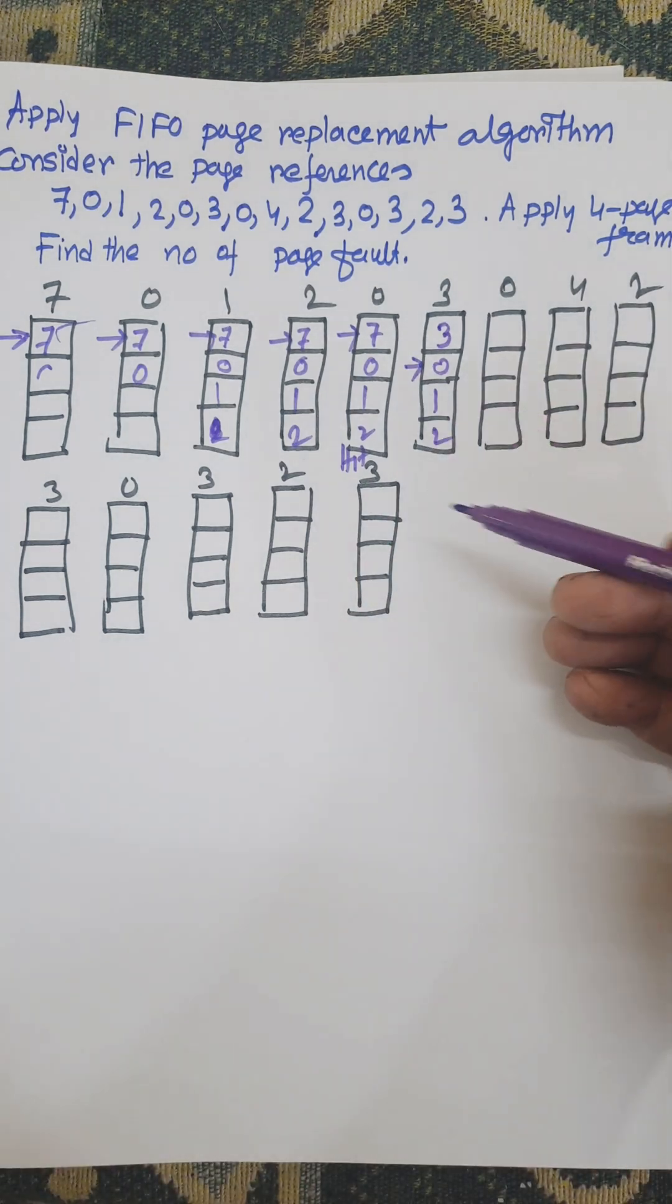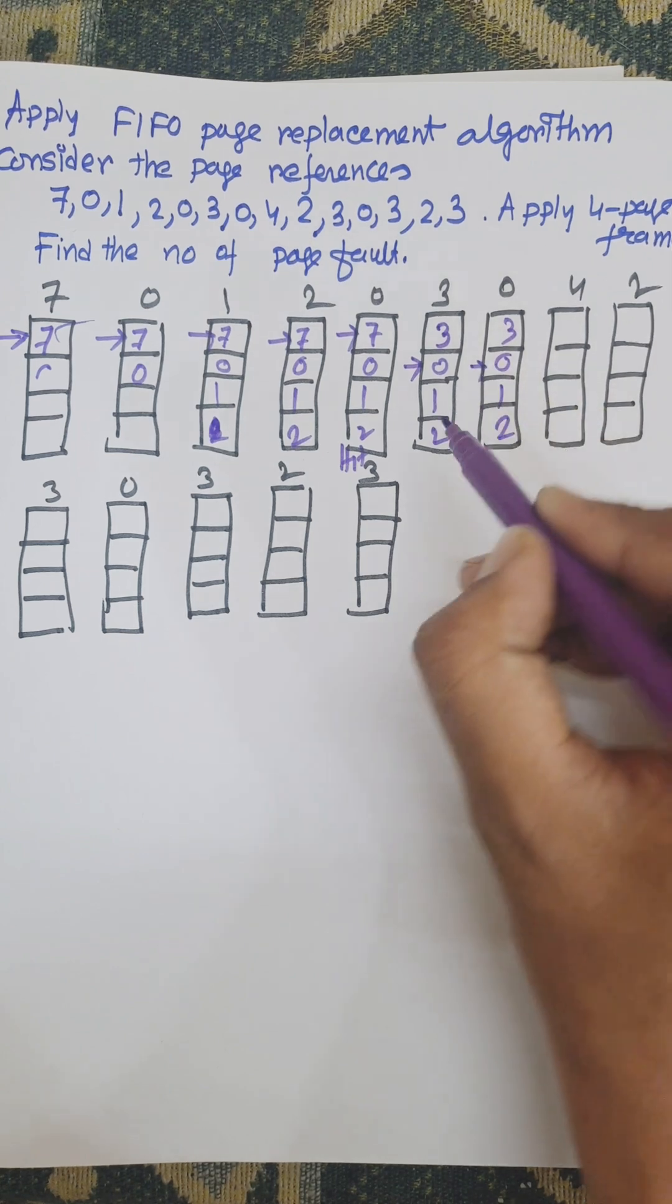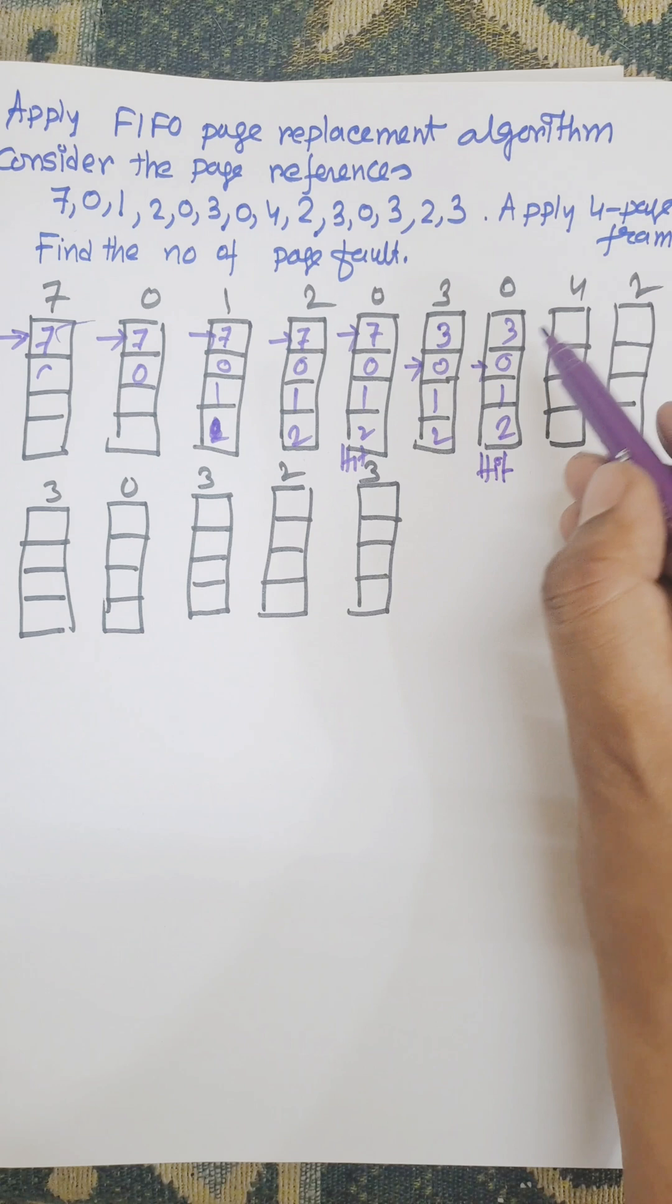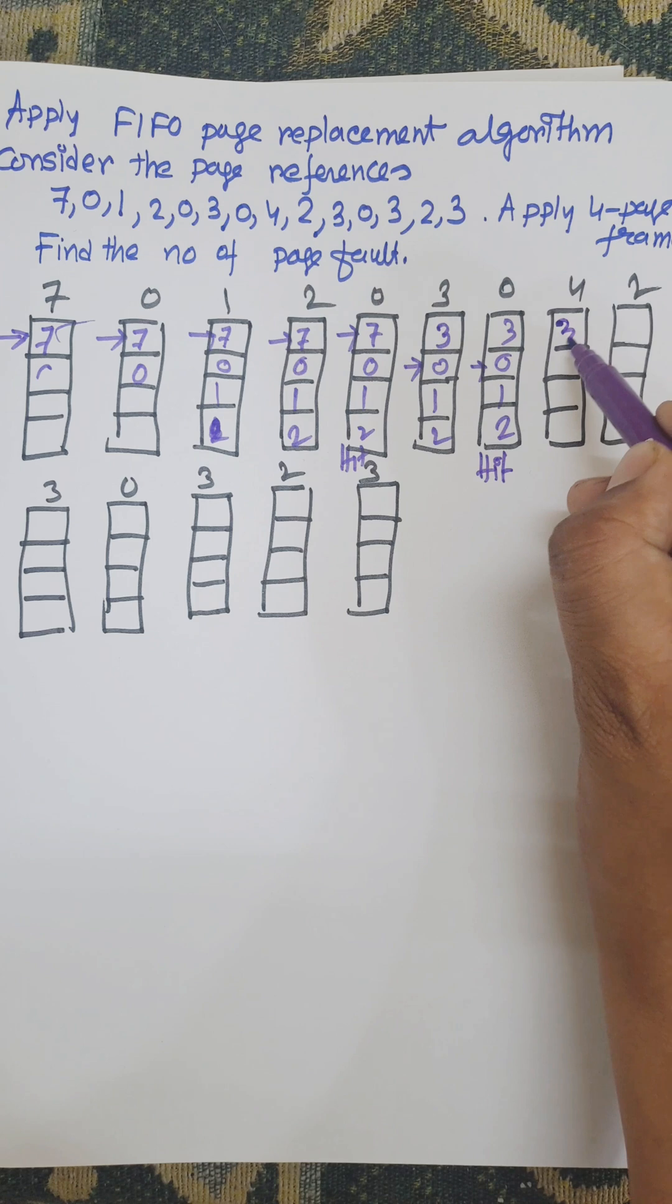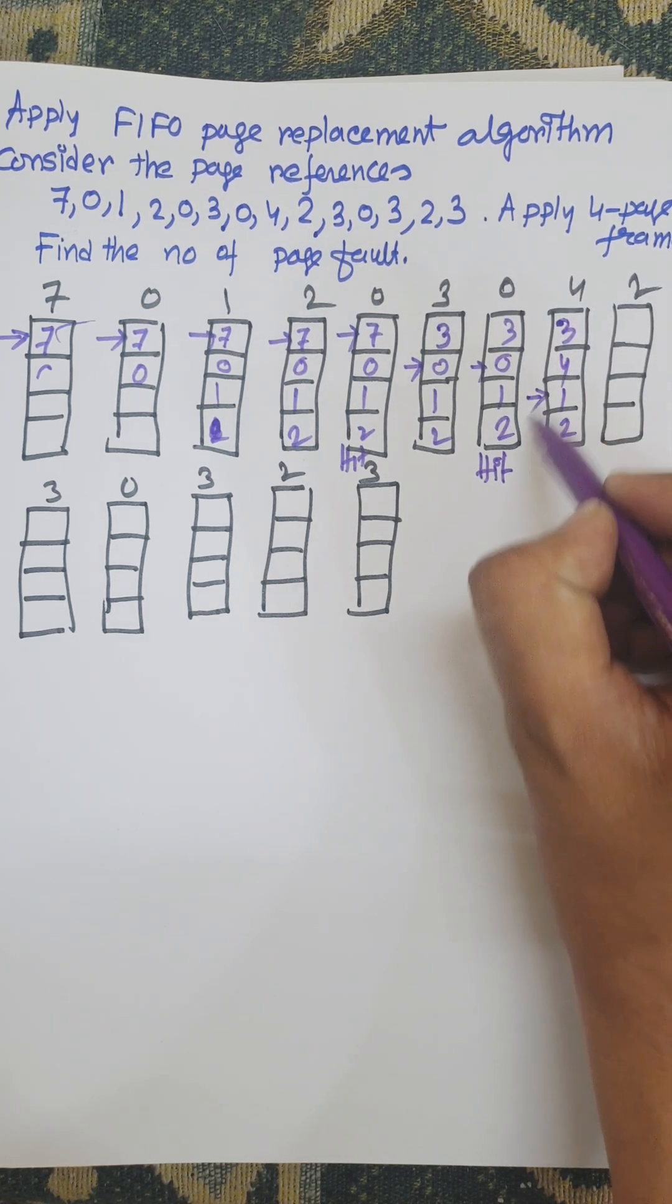Now 3, 0, 1, 2. Here 0 is available, that is hit. In case of hit, no increment is allowed for the pointer. Now 4. Then 4 will replace the 0 position, that is 0 page number. It becomes 3, 4, 1, 2, and the pointer is shifted to the next position.